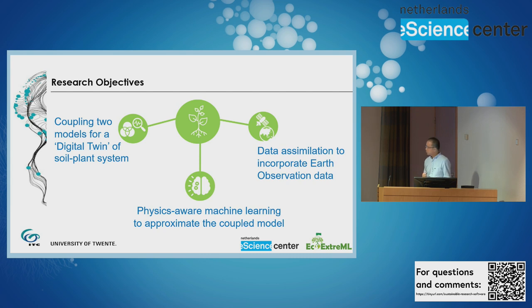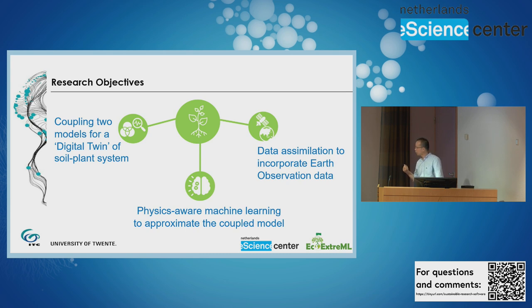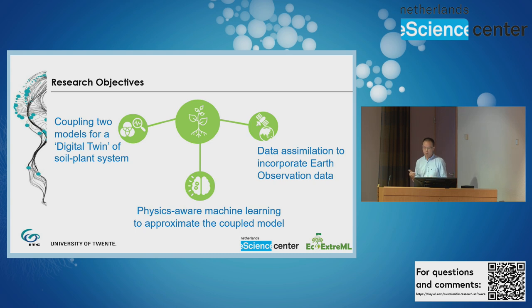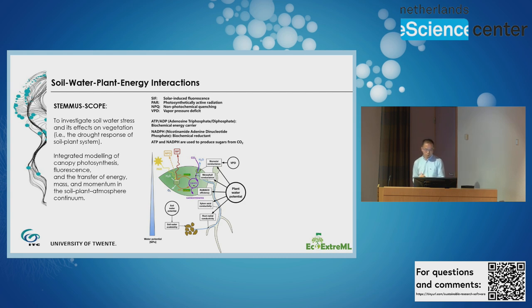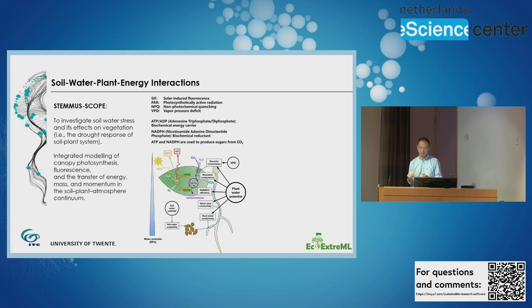There are three research objectives. First, we will couple two models — one soil and one vegetation — for the digital twin of the soil-plant system. Second, we are using physics-informed machine learning techniques to approximate the original model, because the process model can take a long time to run. Third, we are considering data assimilation techniques to incorporate earth observation data for monitoring the drought response of ecosystems. We need to understand how water transports from soil to root, stem, and leaf, and then escapes from the stomata.